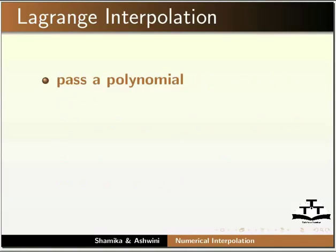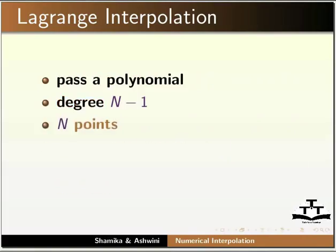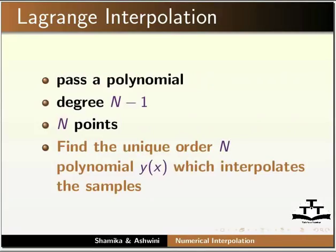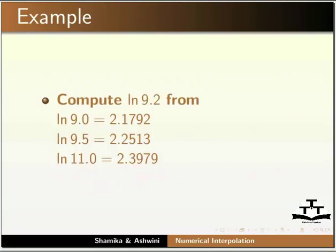In Lagrange interpolation, we pass a polynomial of degree n minus 1 through n points. Then we find the unique n-order polynomial y of x, which interpolates the data samples. We are given the natural logarithm values for 9, 9.5, and 11. We have to find the value of natural logarithm of 9.2. Let us solve this problem using Lagrange interpolation method.